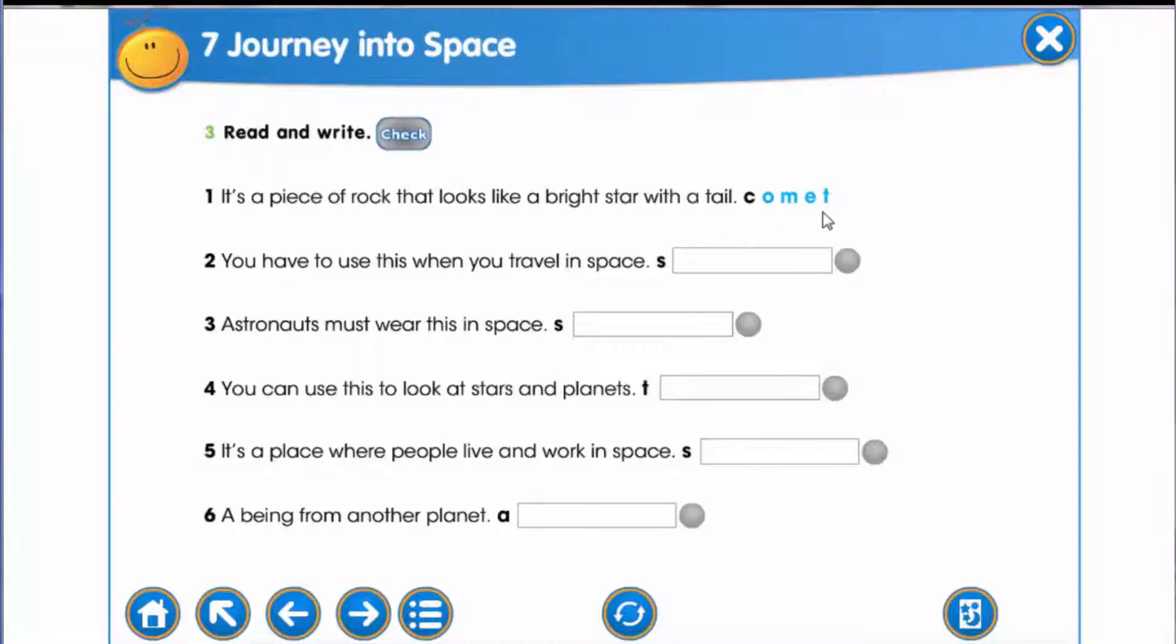Sentence two. You have to use this when you travel in space. The first letter is S. Sentence three. Astronauts must wear this in space. The first letter is S. Sentence four. You can use this to look at stars and planets. The first letter is T.